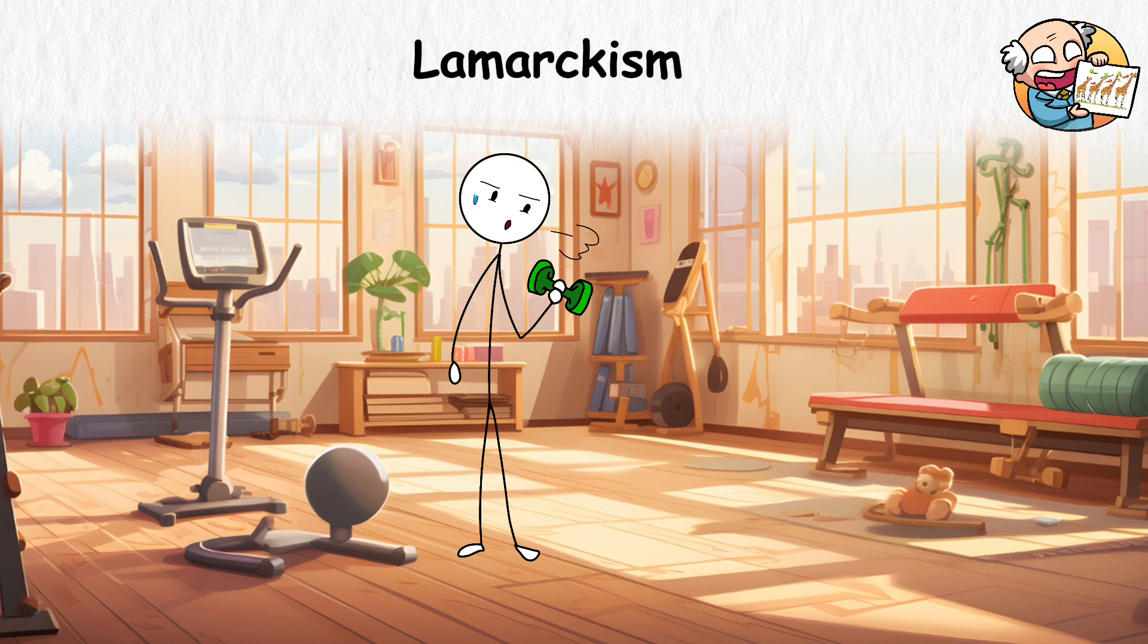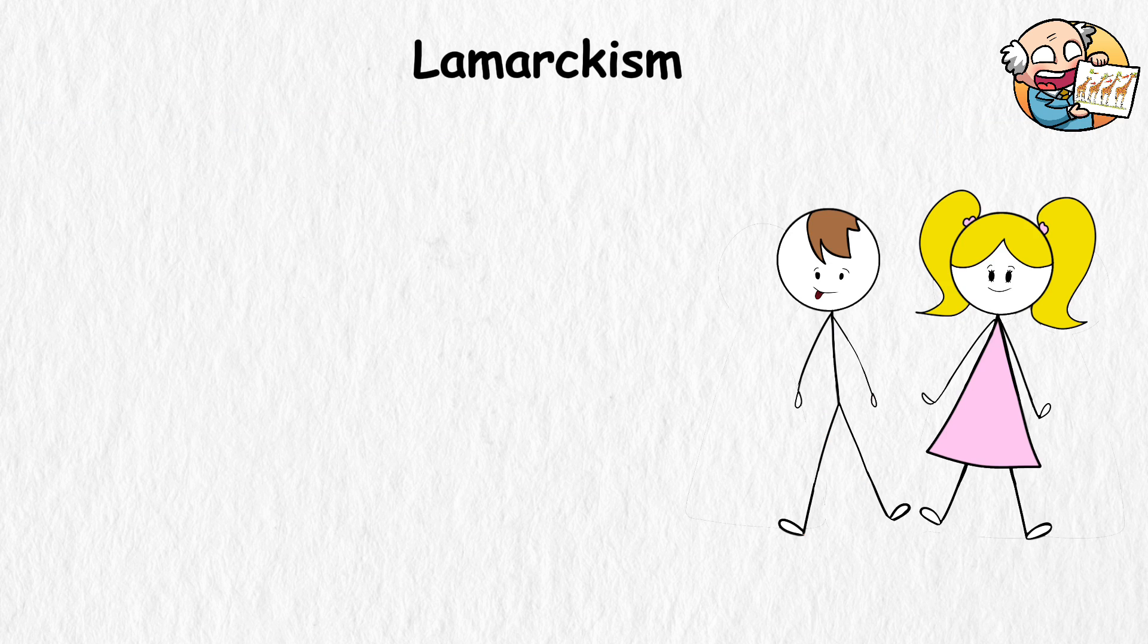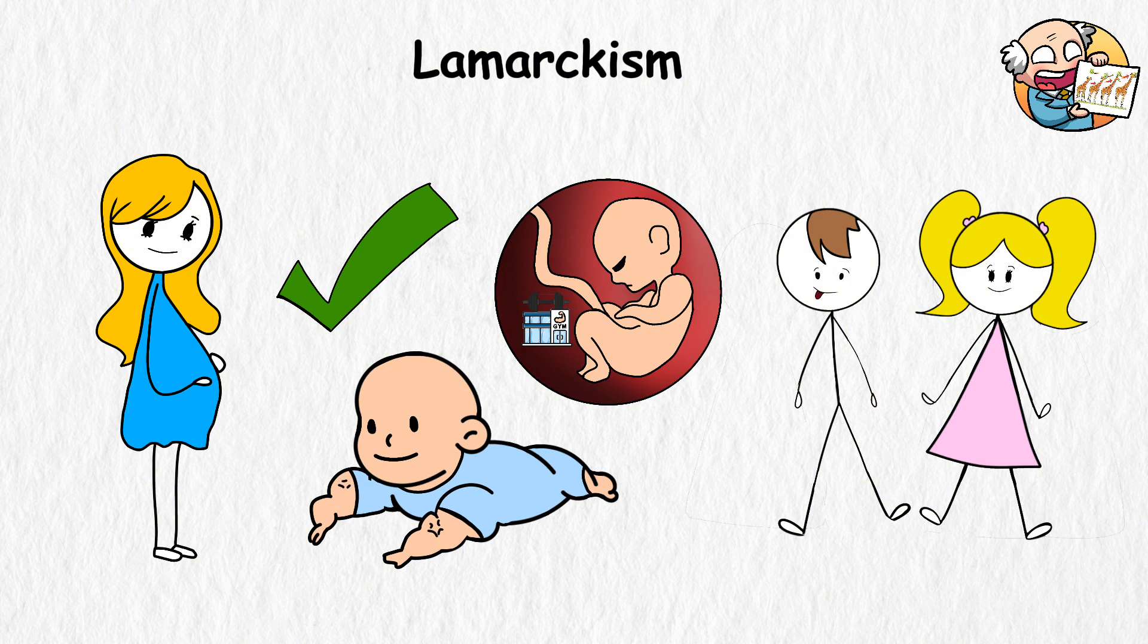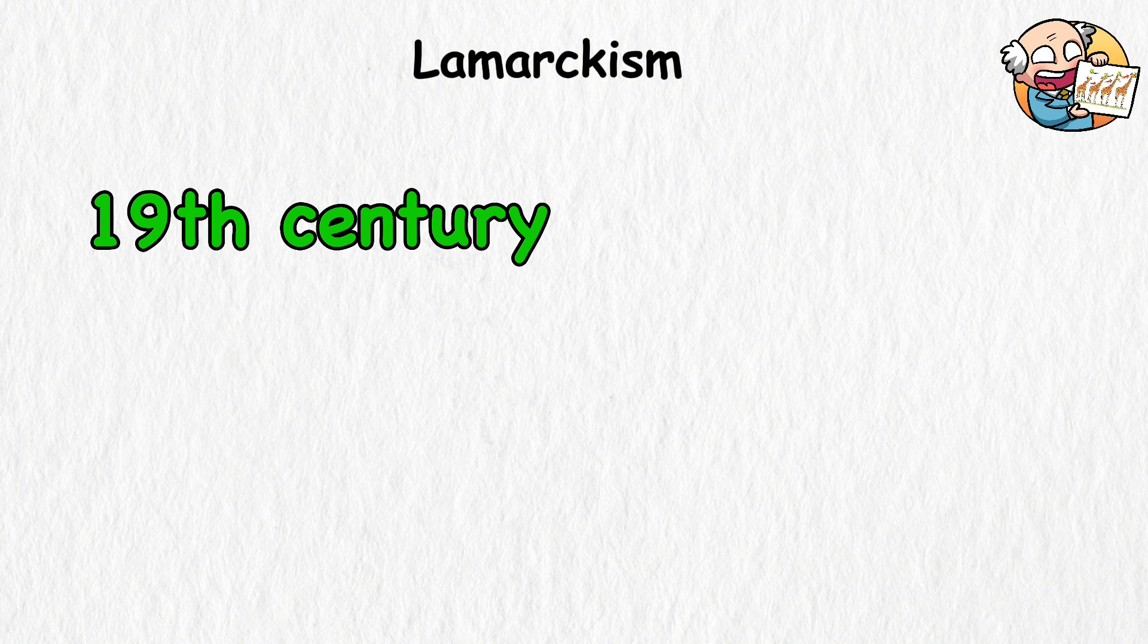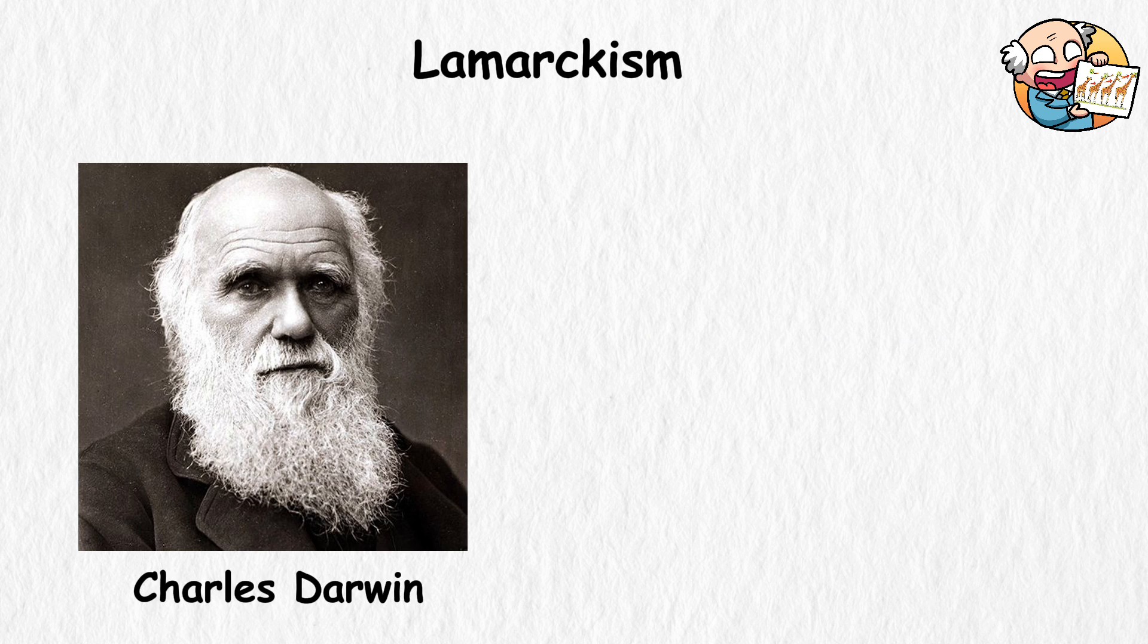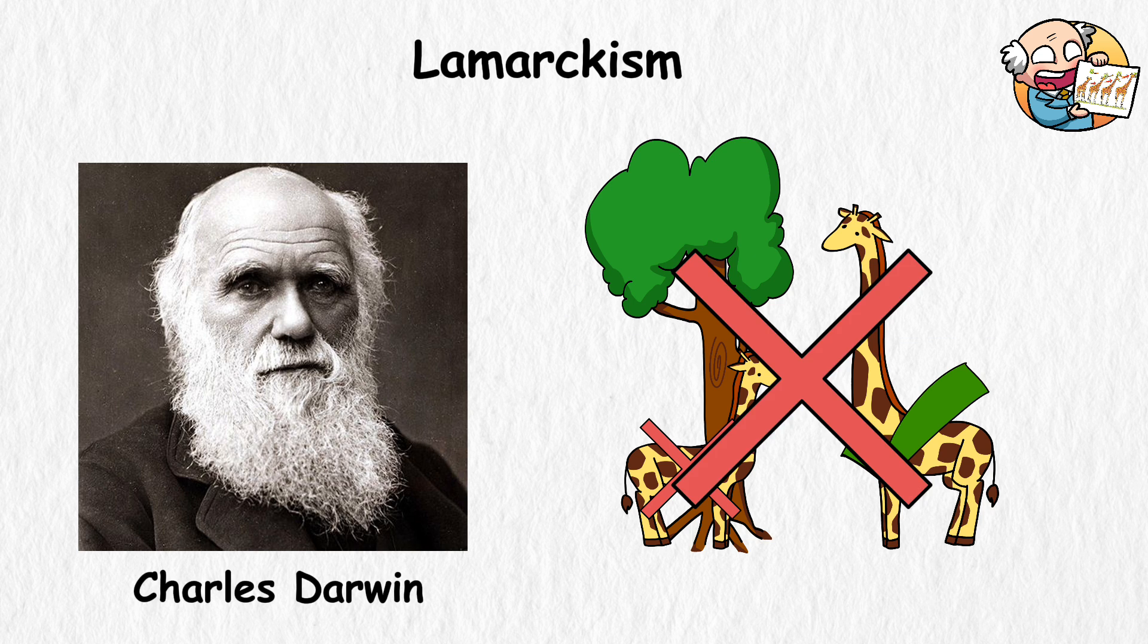Think of it as going to the gym. You lift weights to get super buff. This theory, however, believes that your kids will come out of the womb with baby biceps that make them look like they had a womb gym in their mom's belly. People accepted this theory during the 19th century because it made sense for organisms to pass on the traits they use the most. However, Charles Darwin's natural selection eventually proved this theory wrong.